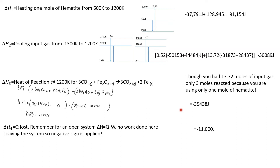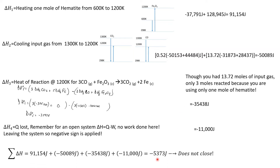Adding all the terms together, I get a grand total of negative 5,373 joules. This means the system does not close. Pay attention to how I calculated the number of moles of CO and CO2 on the input and output streams. If you have any questions, feel free to email me.